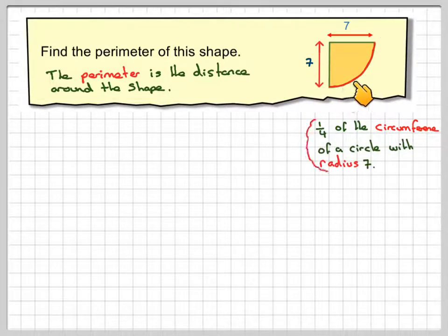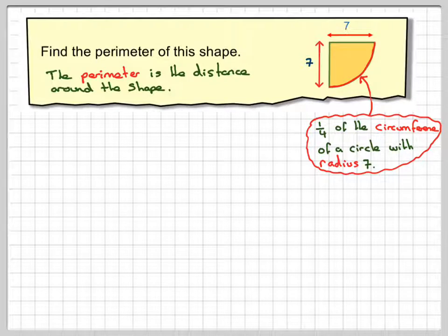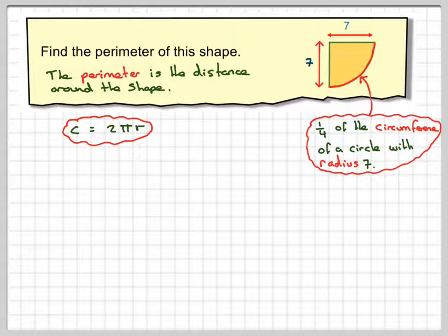And we need to know the formula, because if you don't know the formula you can't do it. The circumference of a circle is C = 2πr, two times pi times the radius.